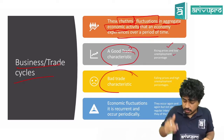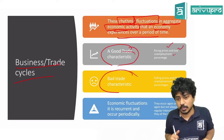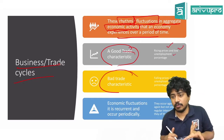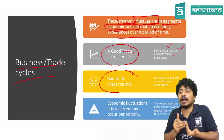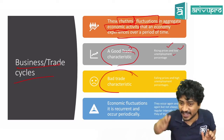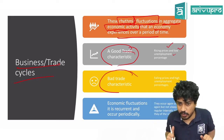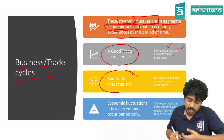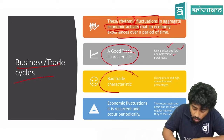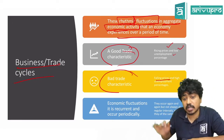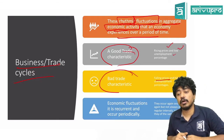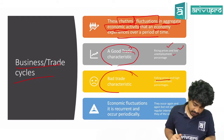Unemployment means not having work. Low unemployment means very few people are unemployed — everyone is working — high employment. That is a good characteristic. A bad characteristic is: fall in prices and high rate of unemployment. Fall in prices and high unemployment — that is a bad characteristic.